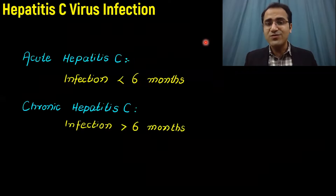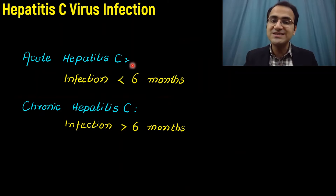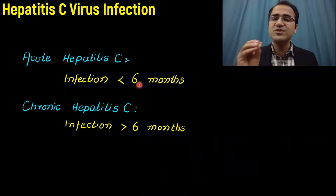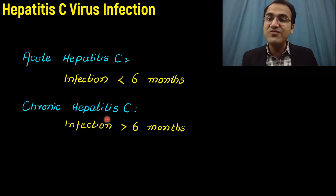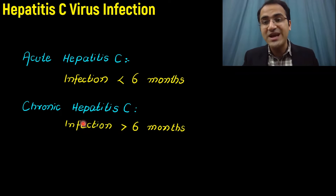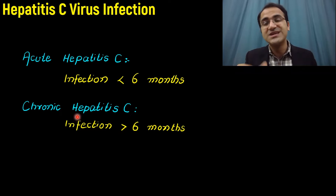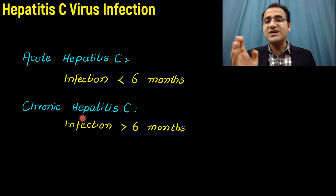Hepatitis C virus is an RNA virus and it presents as either acute hepatitis C or chronic hepatitis C. Acute hepatitis C is infection lasting less than six months; 30% of patients clear the infection within six months. If the infection lasts longer than six months, that is called chronic hepatitis C, and 70% of patients develop chronic infection. Remember: hepatitis C — C for chronic.